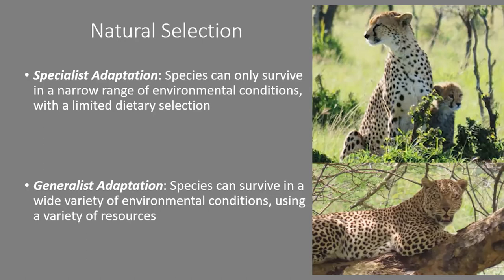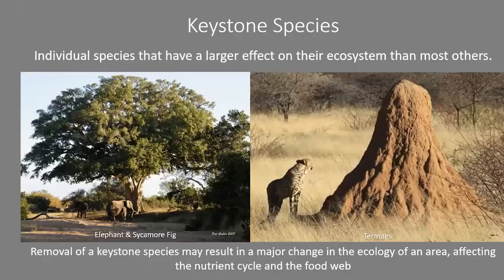Despite lots of habitat loss, leopards are slightly less at risk than many other species — not to say they're not at risk at all. A keystone species is an individual species that has a larger effect on its ecosystem than most others. If you were to remove a cheetah from an ecosystem that still had leopards, lions, wild dogs, and hyenas, you'd probably not see a massive change, because the other predators would take its place and continue hunting the same prey.